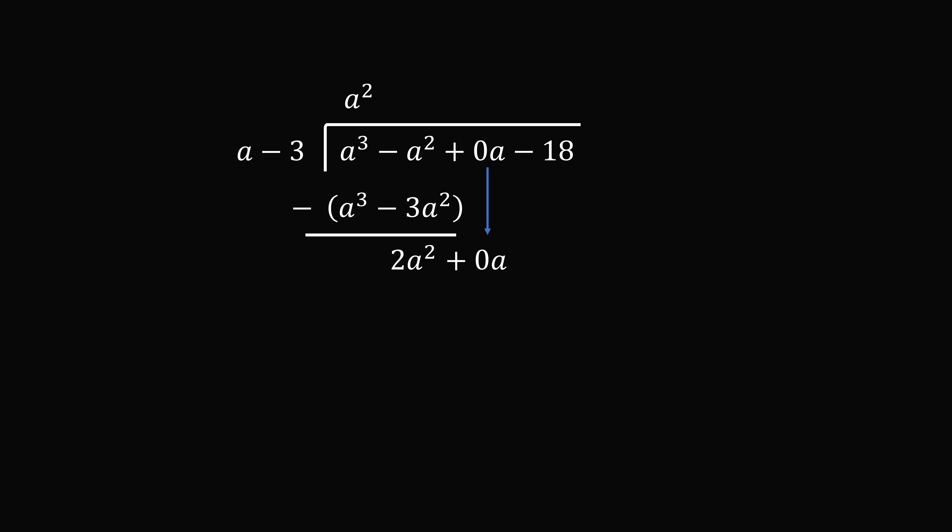Now to eliminate 2a squared, we need to multiply by 2a. So we add 2a here. Then we take 2a multiplied by a minus 3. This works out to be 2a squared minus 6a. We want to subtract this entire term. This works out to be 6a. We then bring down negative 18. So to eliminate 6a, we have to add 6. So we have 6 multiplied by a minus 3. That works out to be 6a minus 18. And finally we subtract this. And this works out to be 0. So there's no remainder.